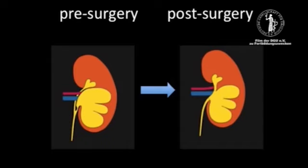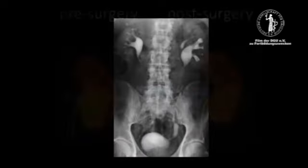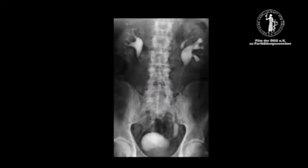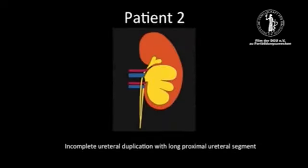The pre- and post-surgery schemas illustrate the performed reconstruction with upper to lower pole ureteropyielostomy and lower pole pyeloplasty. Intravenous urography at 3 months shows both a wide left lower pole UPJ and an open proximal ureteropyielostomy.